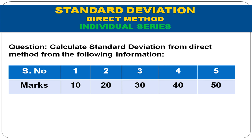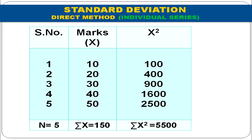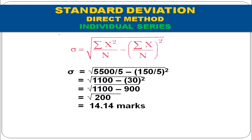Calculate standard deviation by direct method. Marks: 10, 20, 30, 40, 50. ΣX² = 5500, Σx = 150, n = 5. Applying the formula: SD = √(5500/5 − (150/5)²) = √(1100 − 900) = √200 = 14.14 marks. This is how we calculate standard deviation by the direct method in case of individual series.